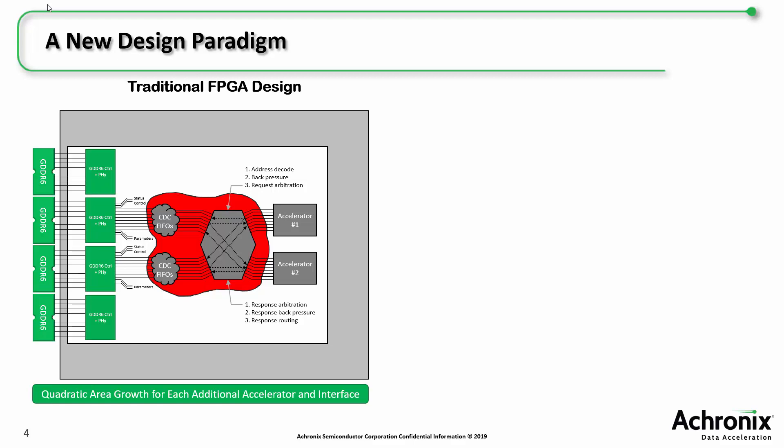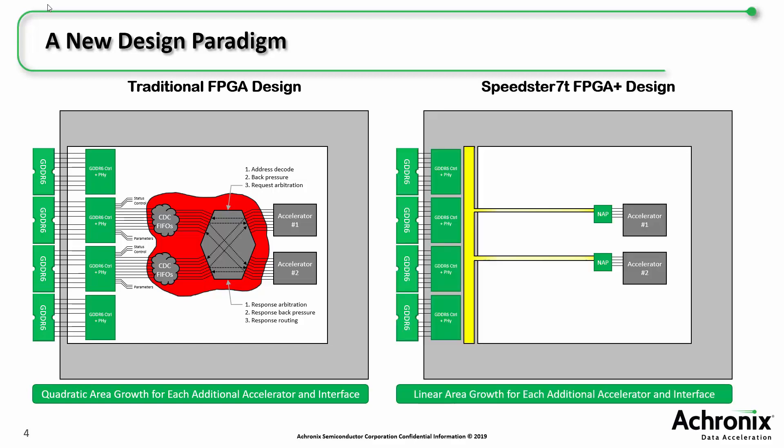All this extra design work takes up significant design time and uses up large amounts of the FPGA resources. For each additional accelerator and interface, you get quadratic area growth. In the Speedster 7T, the NOC takes care of all these extra pieces. The user only needs to design their accelerator and instantiate a NOC access point, or NAP. This connects directly to the NOC, which provides all the logic for address decoding, flow control, transaction arbitration, and clock domain crossing. The NOC also handles connecting to the GDDR6 controllers, so the user doesn't have to worry about placing their logic as close as possible to a large set of interface signals. This solution not only significantly reduces design time, but it also frees up FPGA resources for other parts of your design, leaving you with only linear area growth for each additional accelerator and interface.